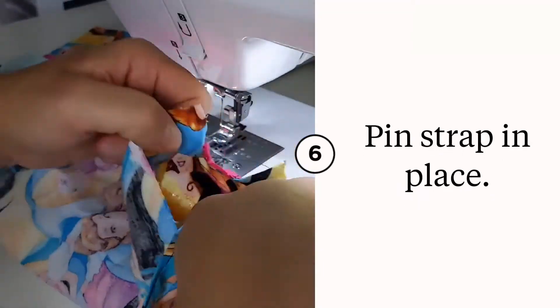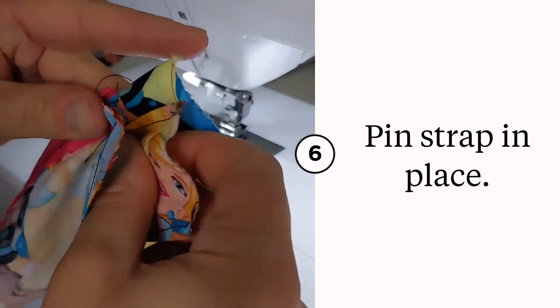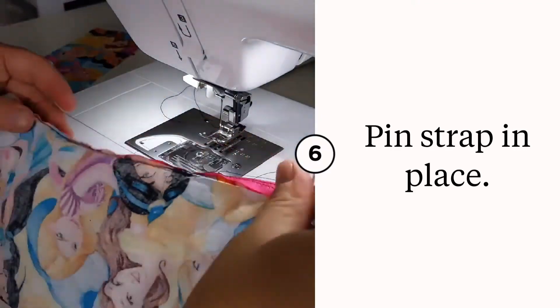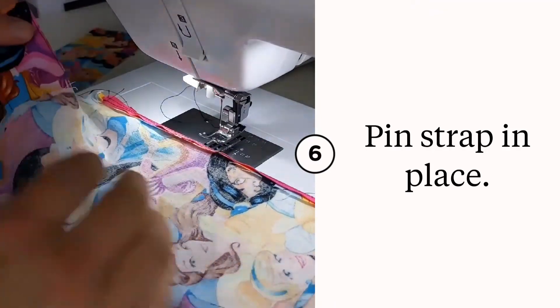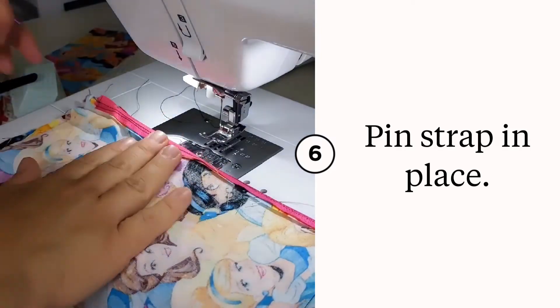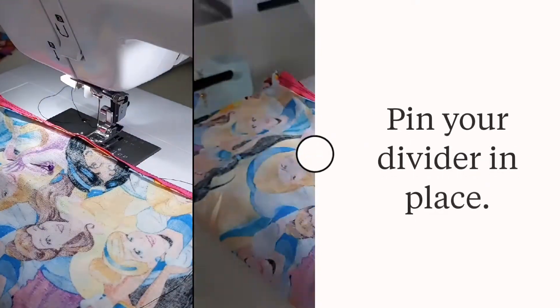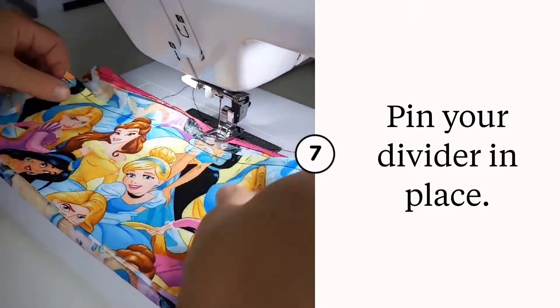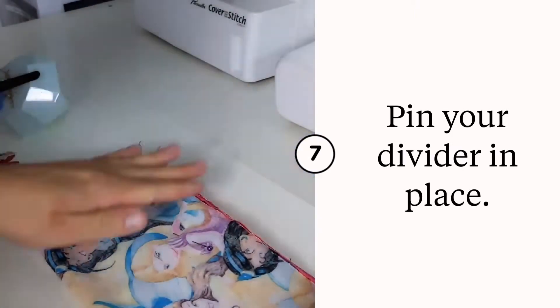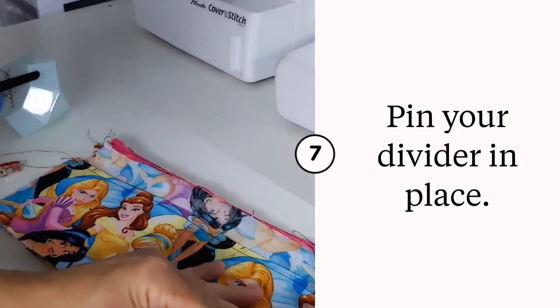So at this point we haven't sewed the sides down and we have our strap we need to include. You want to position it where you want it on the bag and pin it in place or use a clip to hold it. The strap's pretty long, so you want to pin it sort of in the middle so you don't accidentally sew it down. Now you need to pin your divider on as well. Just line it up nice here and put a couple pins in to hold it in place.